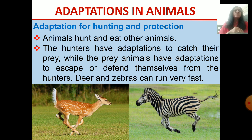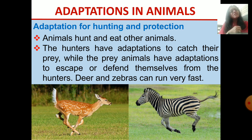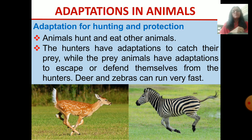Animals hunt because carnivores eat other animals, so they have to hunt other animals. The hunter animals have adaptations to catch their prey, while the prey animals also have adaptations to escape or defend themselves from the hunters. If they see a hunter animal coming to catch them, they will try to escape or defend themselves. Examples are deer and zebras.